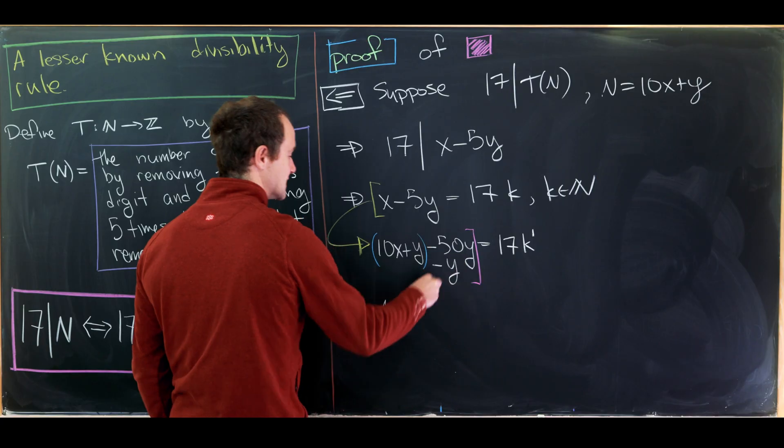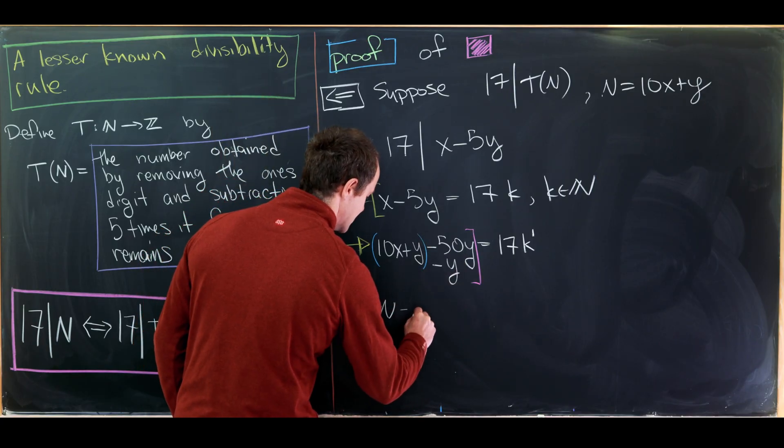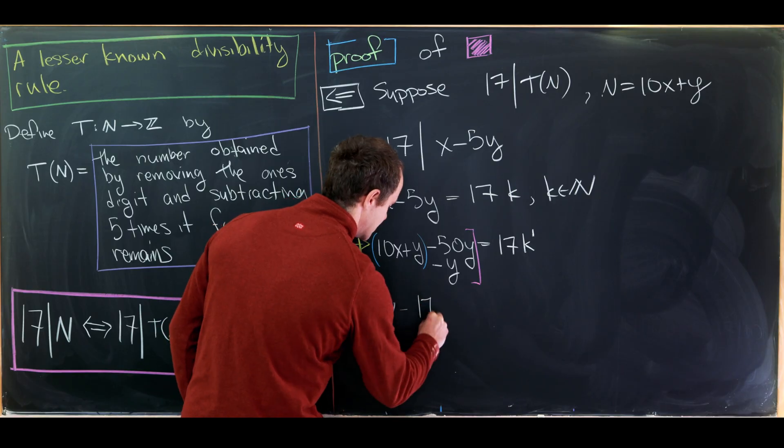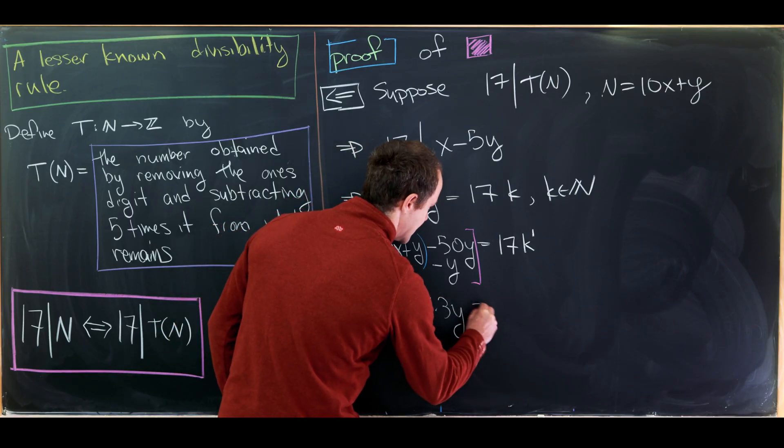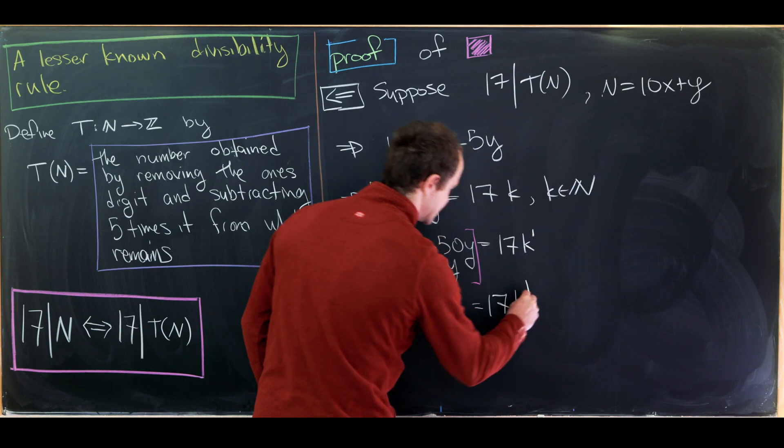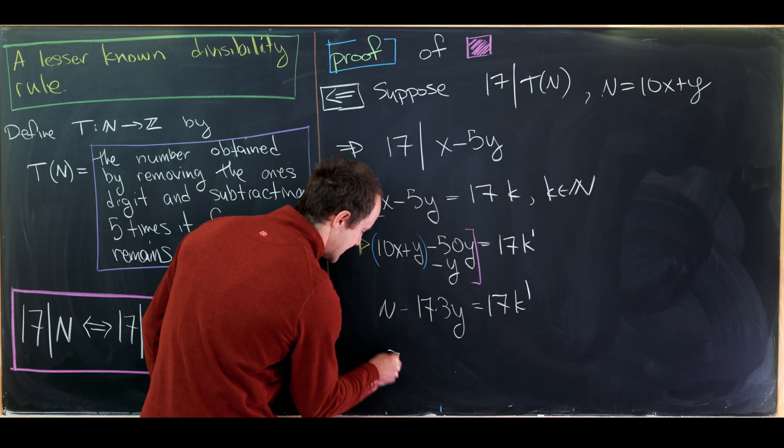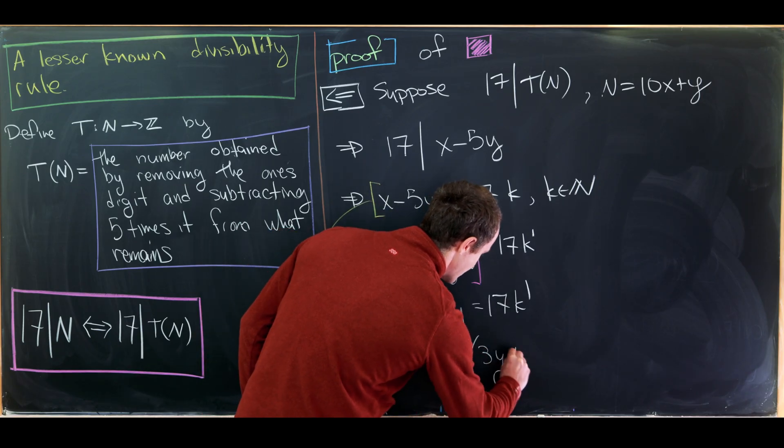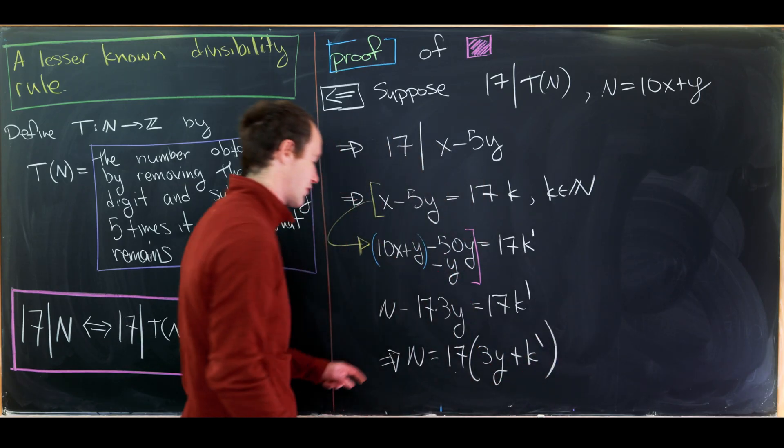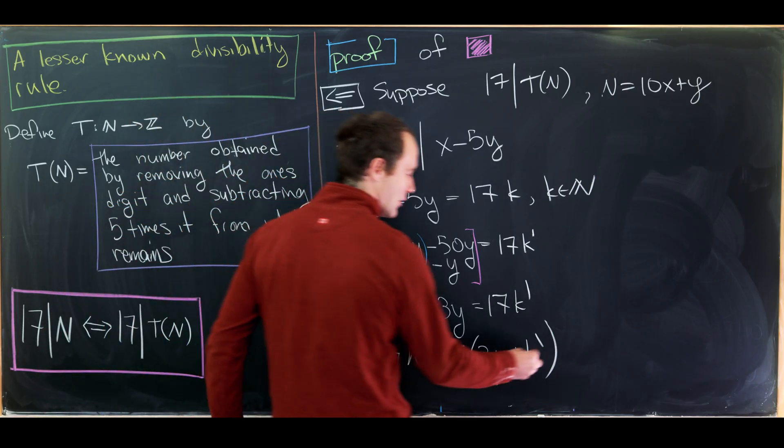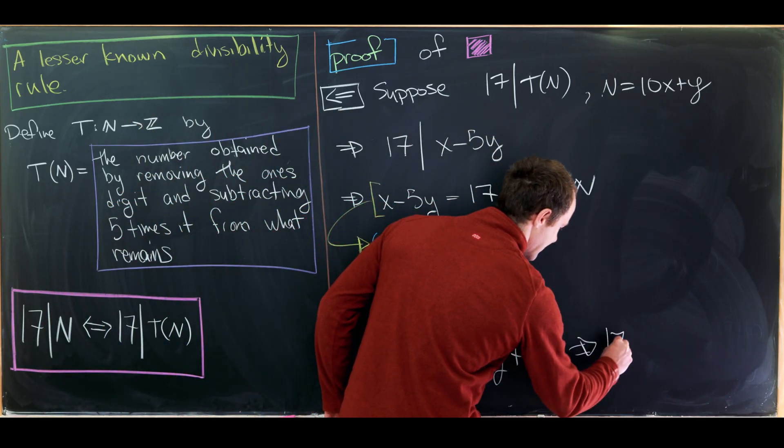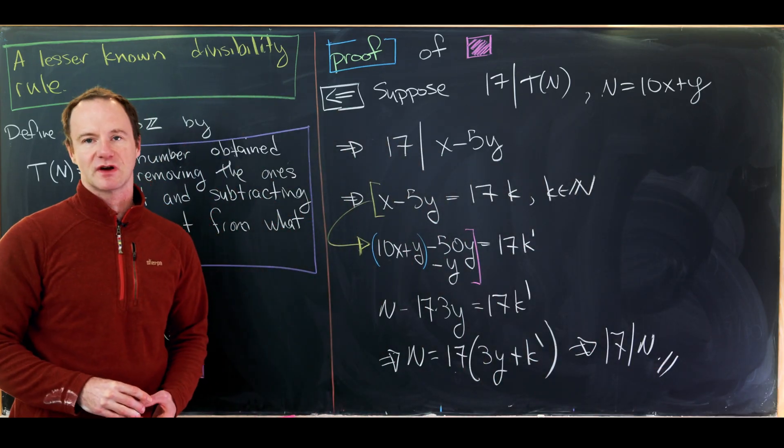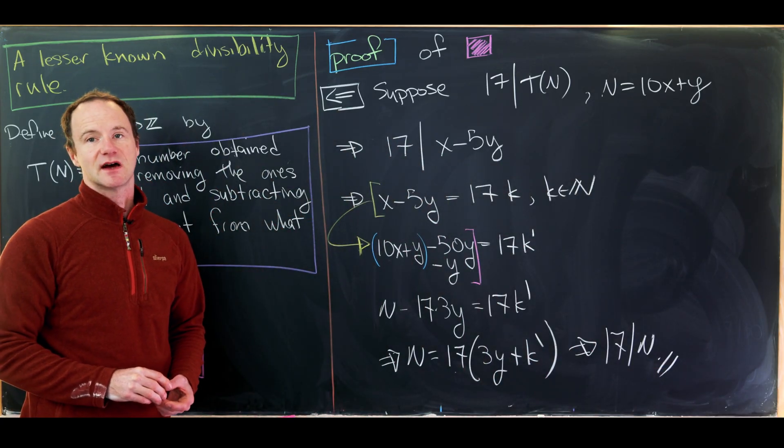And then we have minus 51y. So that's going to be minus 17 times 3y equals 17 times k prime. But now we can see that n is in fact equal to 17 times 3y plus k prime. But that's exactly what we need for 17 to divide n. And that finishes off this reverse direction. And that's a good place to stop.